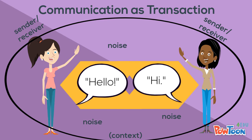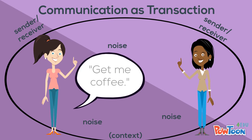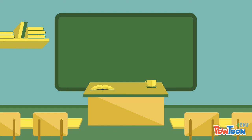The other two models don't have this context component. For example, your boss sends a message telling you to get her a coffee, and although you do not verbally respond, you are communicating with her when you roll your eyes at her while she is speaking.